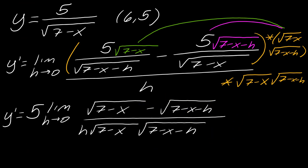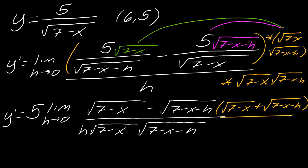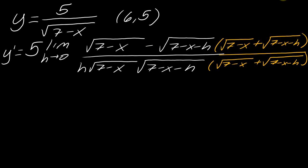And since we've got square roots, a really common technique would be to use the conjugate. So I'm going to multiply the top by the square root of 7 minus x plus the square root of 7 minus x minus h. And whatever I do to the top, I have to do the same thing to the bottom. This is a technique we already practiced with limits. I'm only going to do the multiplication on top — it's usually a good idea to start with the side where you're specifically applying the conjugate. You might want to pause the video here and work this out on your own.